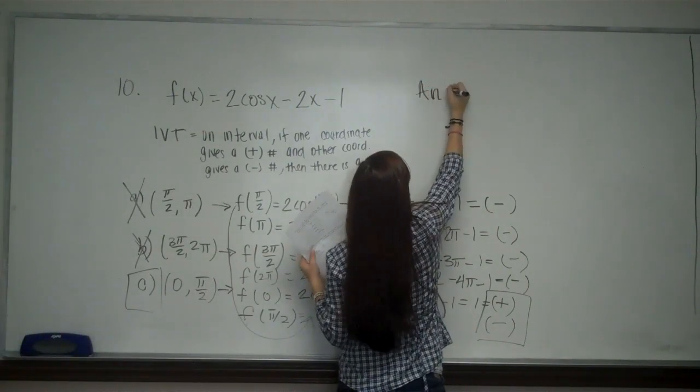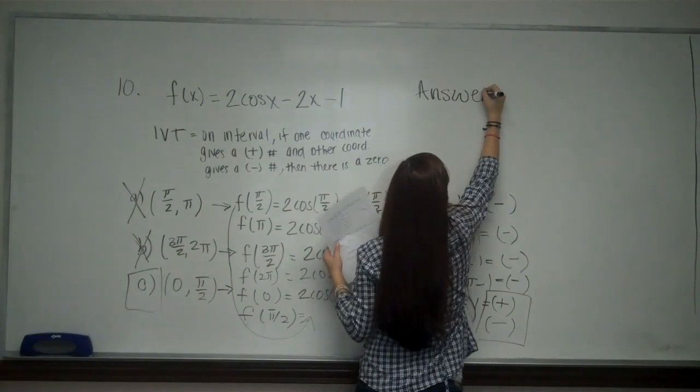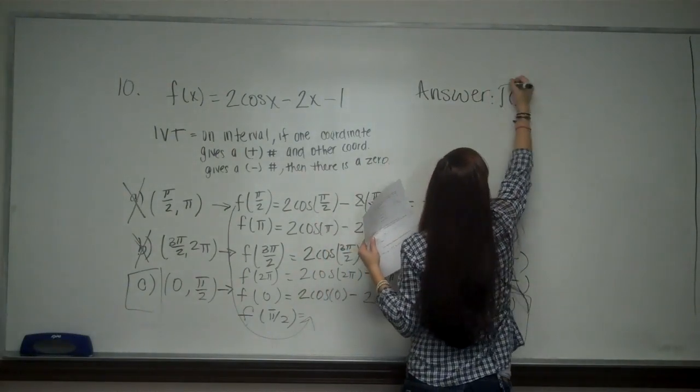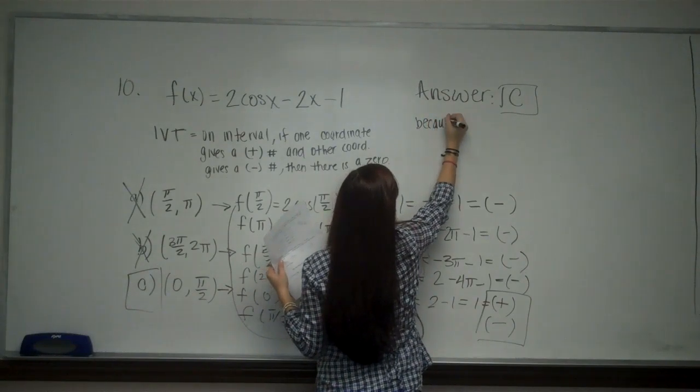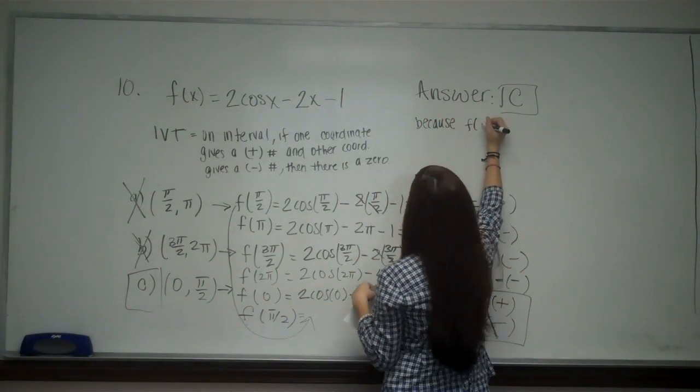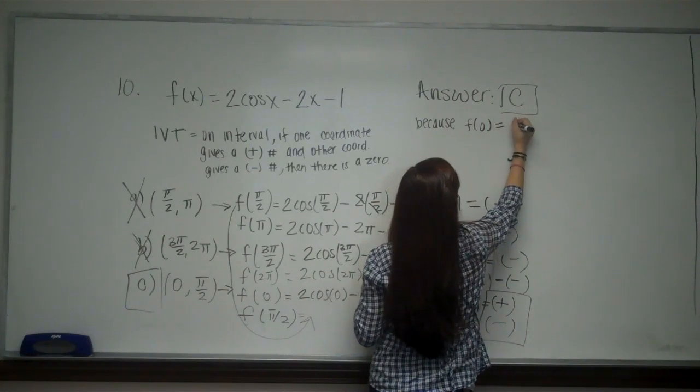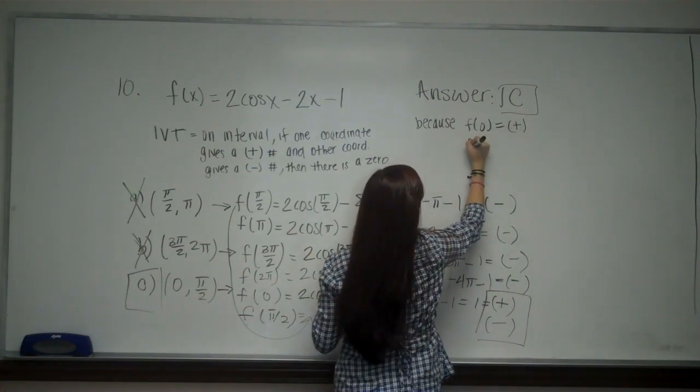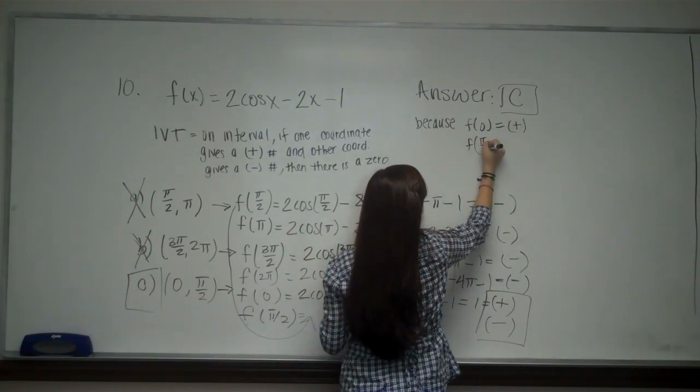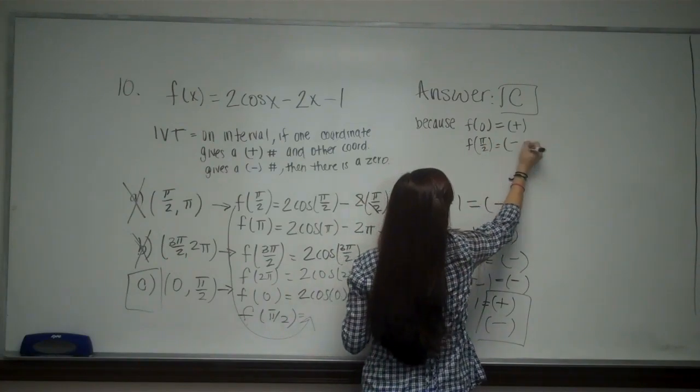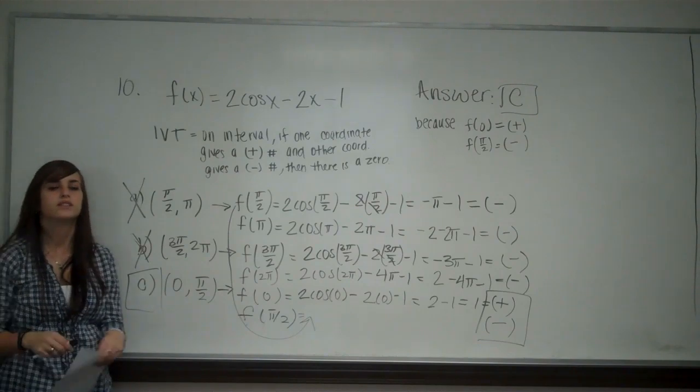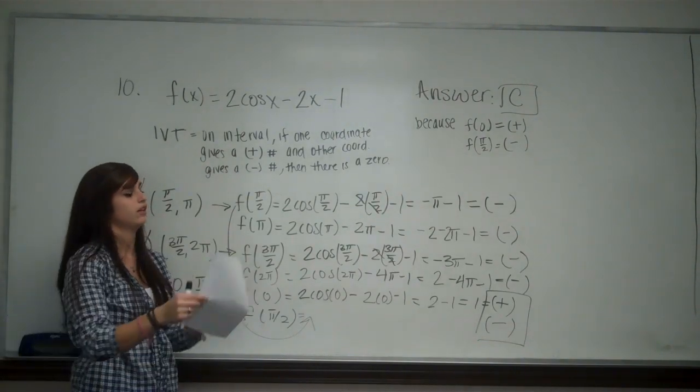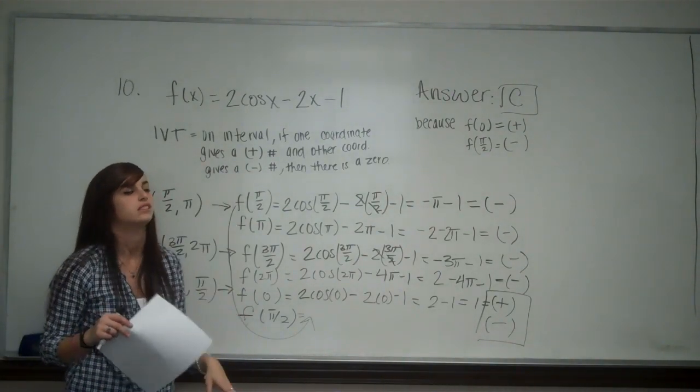And I don't even need to test D. And this is because f(0) is a positive number and f(π/2) is a negative number. So it's a little time consuming but you know that one of these answers has to be. So that's problem number 10.